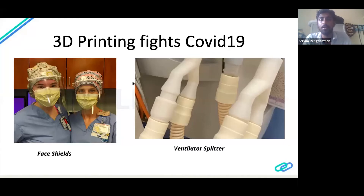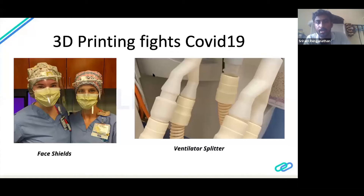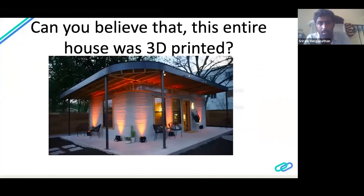A ventilator splitter is a very important life-saving device. India as a country has only 80,000 ventilators, but once the corona outbreak escalates we might need somewhere around five to six lakh ventilators. 3D printing has come up with a dynamic solution — splitting a single ventilator across two or three patients. The Y-junction you see is a ventilator splitter which splits oxygen to two patients, so one ventilator can serve two to four patients.